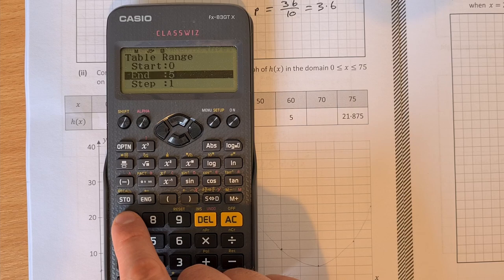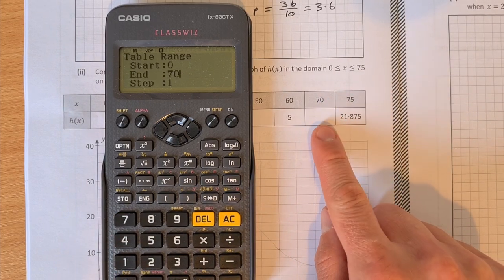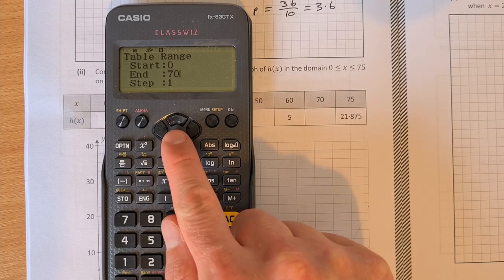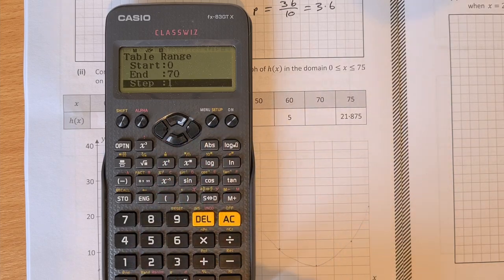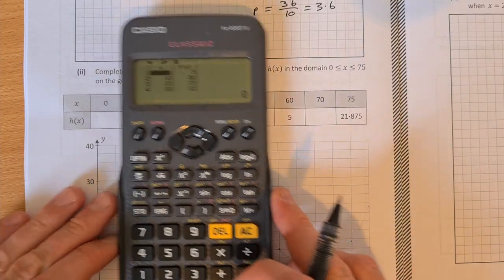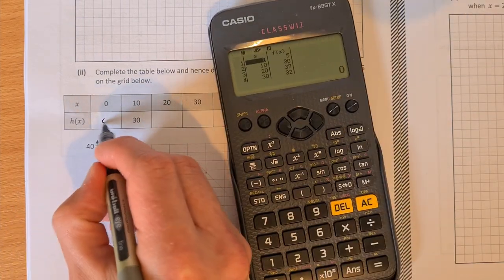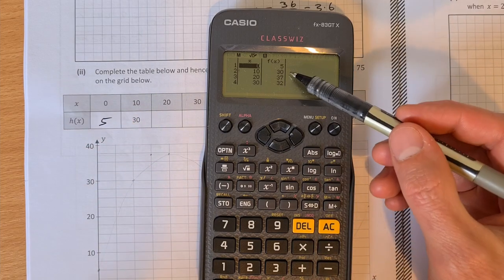We're going to end at 70. We don't need to go up to 75, because 75 is in the table there. We're going to end at 70. And our steps, press equals, our steps, we're going to go up in 10s. And this gives us all we need to know here. So when x is 0, f of x is 5.